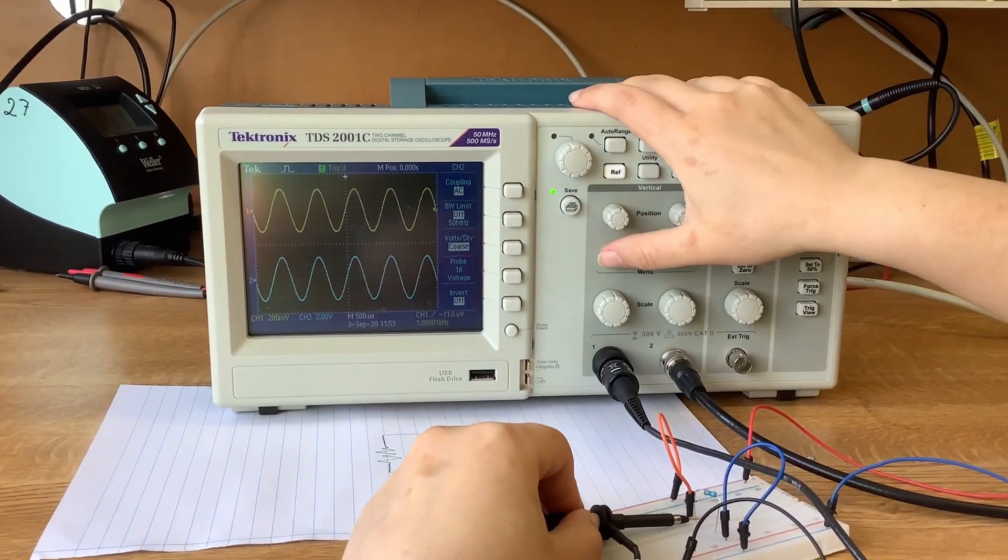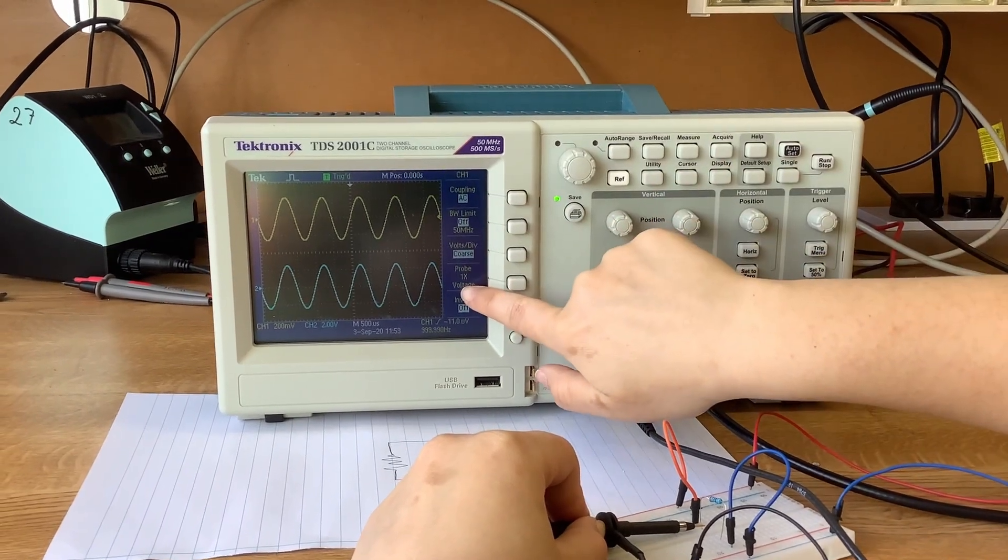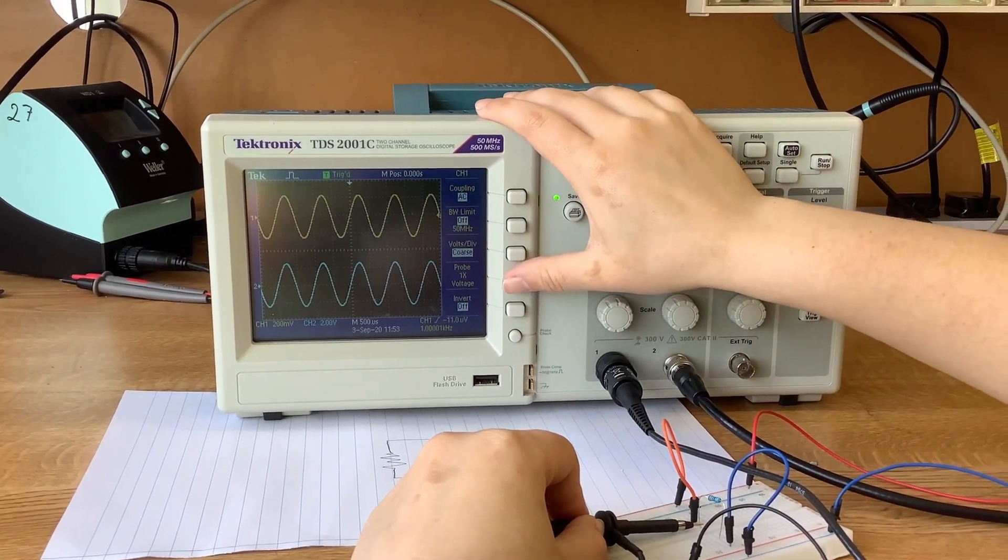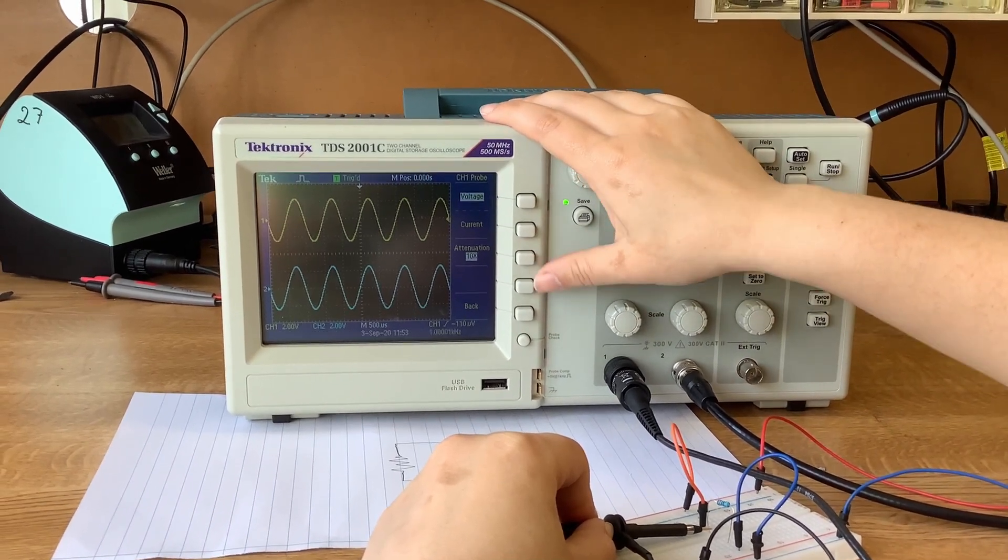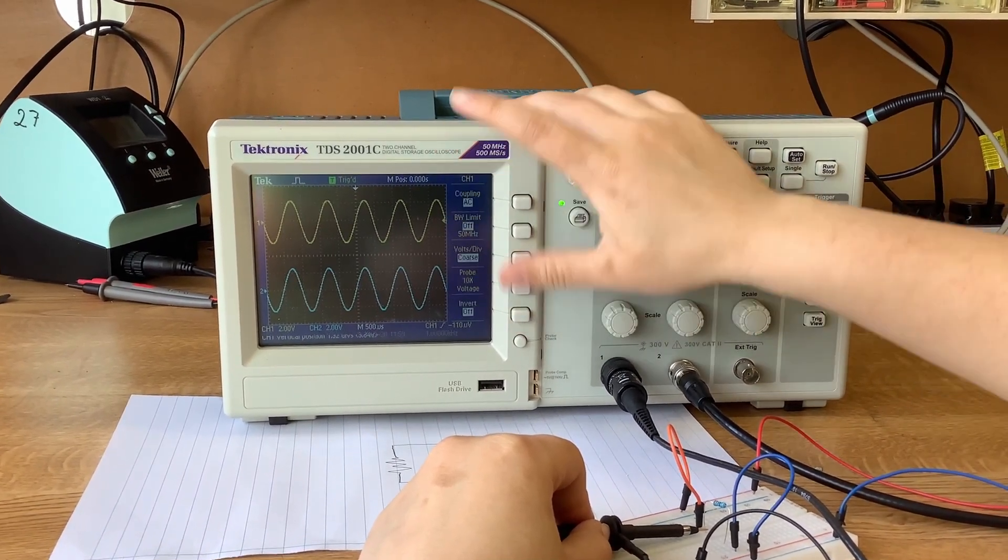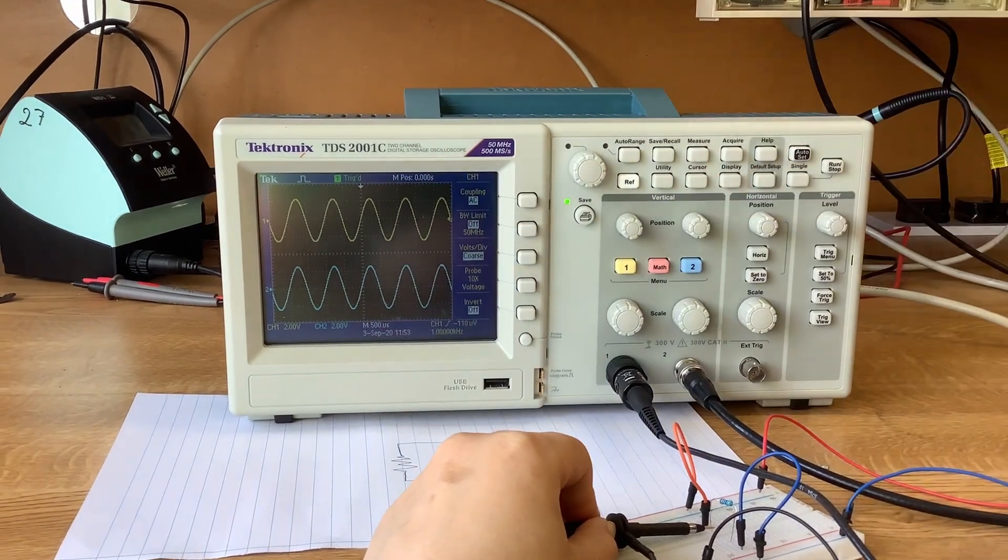What we do is go to channel 1 and in here, the probe is set to 1. But we know that the probe that we are using has an attenuation of 10. So, we just go and change it. And now, we get the 2 volts that we're expecting.